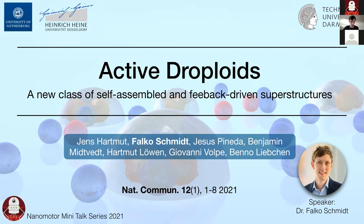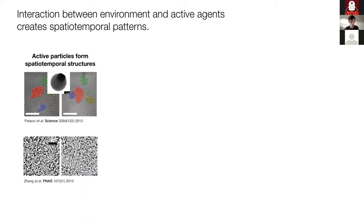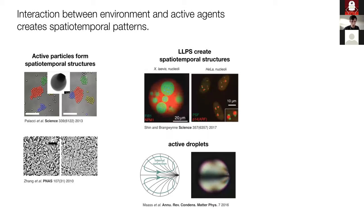Just to give some background: typically when people talk about active matter systems, they don't look much at the interaction with the environment. But you can see that with active particles like these hematites — basically Janus particles — you can get spatial-temporal structures. Not only synthetic materials generate these structures; natural agents like bacteria do too. Similar structures have been observed for droplets — the nucleolus is an example of a droplet inside a droplet — and droplets have been shown to become active due to internal convection mechanisms and therefore become motile.